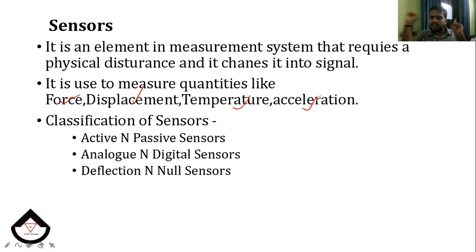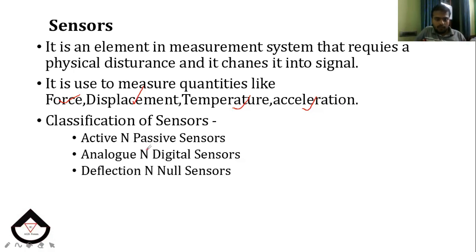Classification of sensors. We have three types of classification: active sensor and passive sensor; analog sensor and digital sensor; deflection and null type sensor.